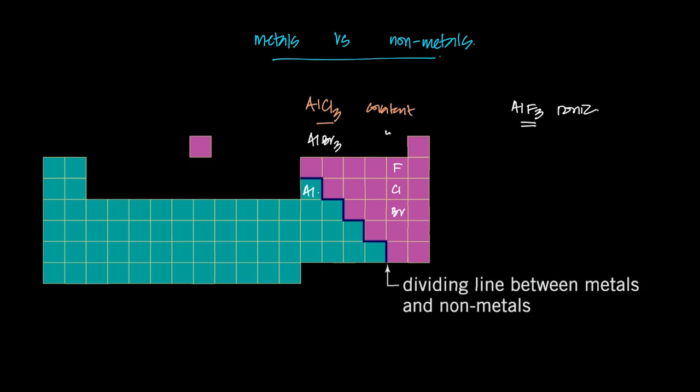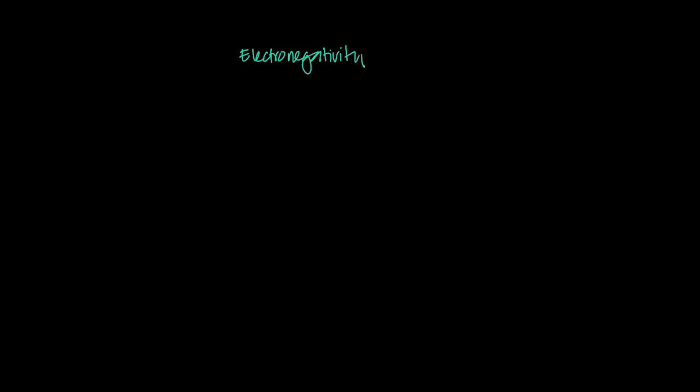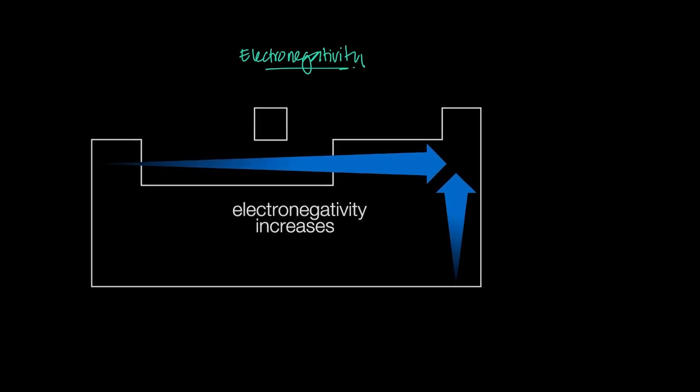There is some other property that changes as you go from fluorine to chlorine to bromine, which is why aluminum with chlorine and bromine is covalent, while with fluorine it's ionic. That property is called electronegativity — the power of an element to attract electrons. Every atom has this ability to attract or pull electrons, but it varies from element to element. Electronegativity increases across a period and increases up a group — it's mainly considered for groups 1 to 17, not noble gases, since they don't bond.